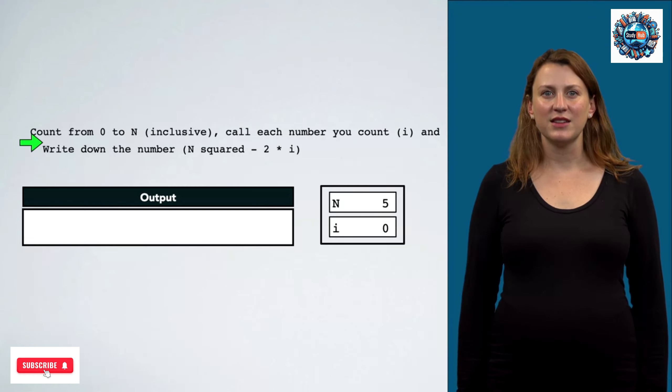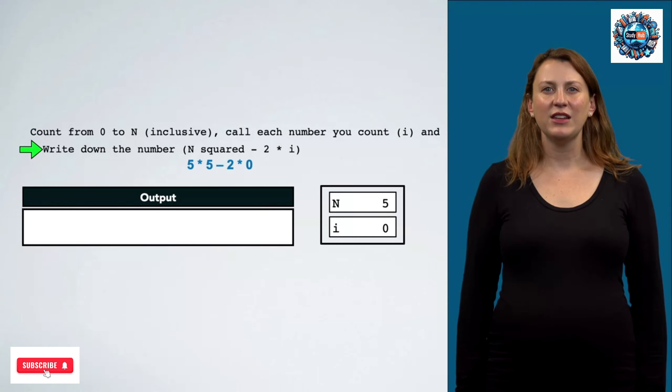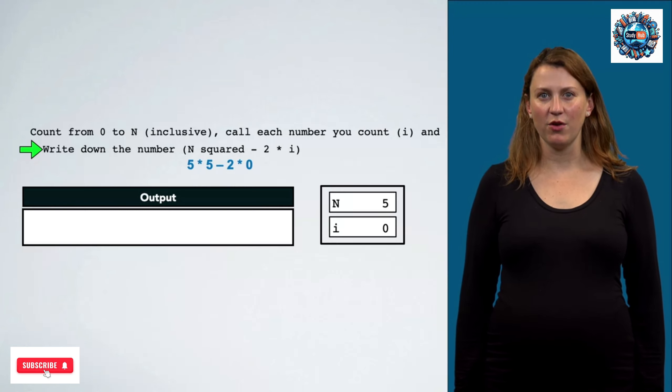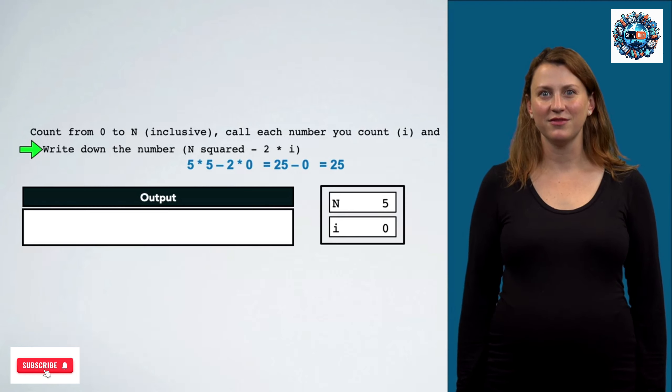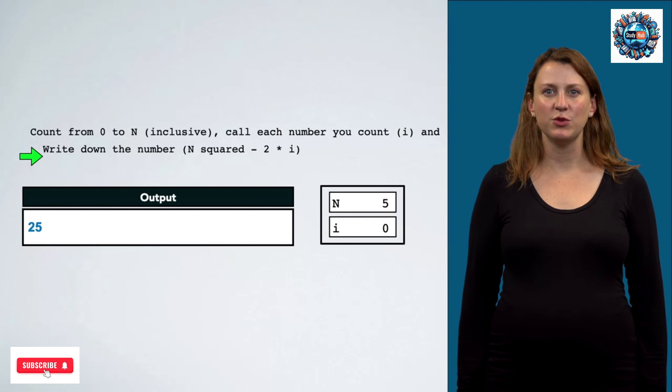Now we enter the next step. The next thing we're going to do is write down n squared minus 2 times i. We have a little bit of math to do here. n has the value 5, and i has the value 0, so this gives us 25 minus 0, or 25. And again, we're supposed to write this number down, so we place this number into our output box.